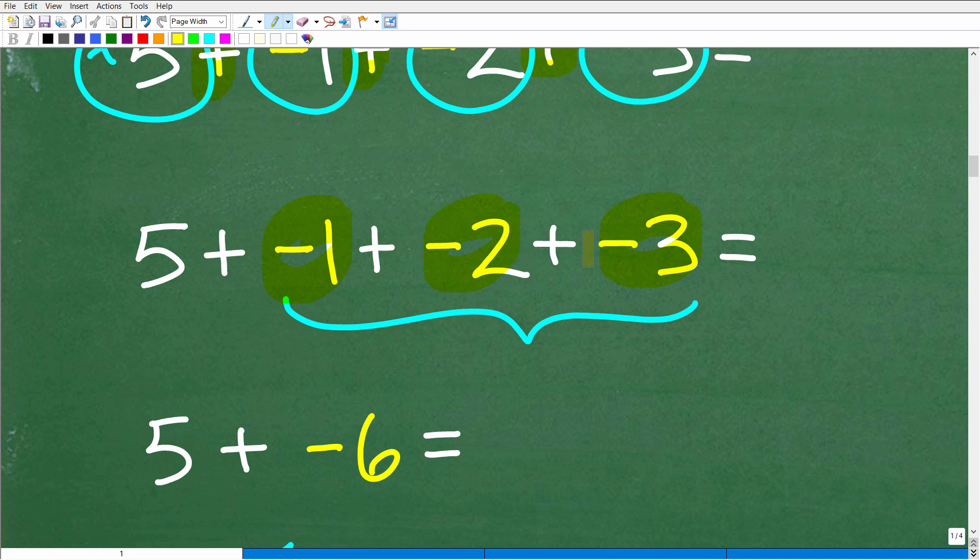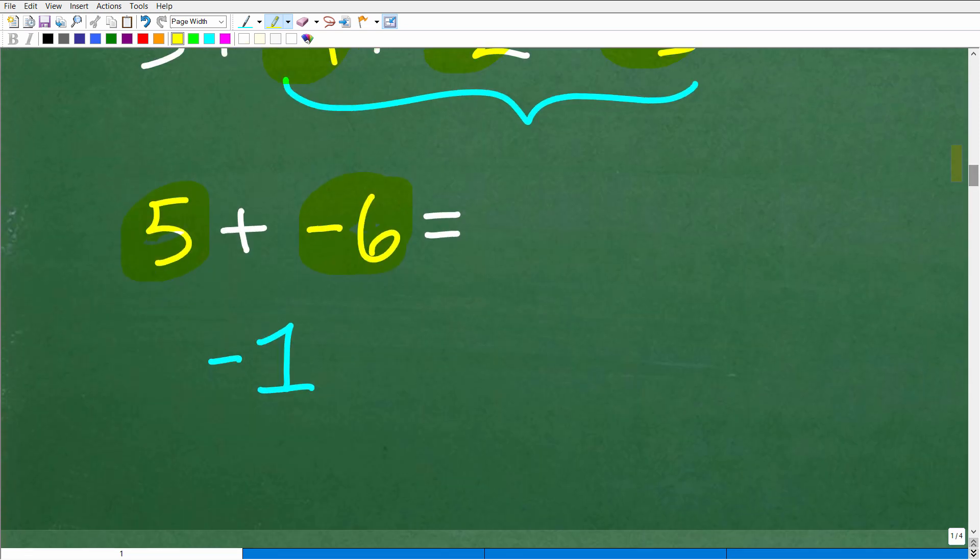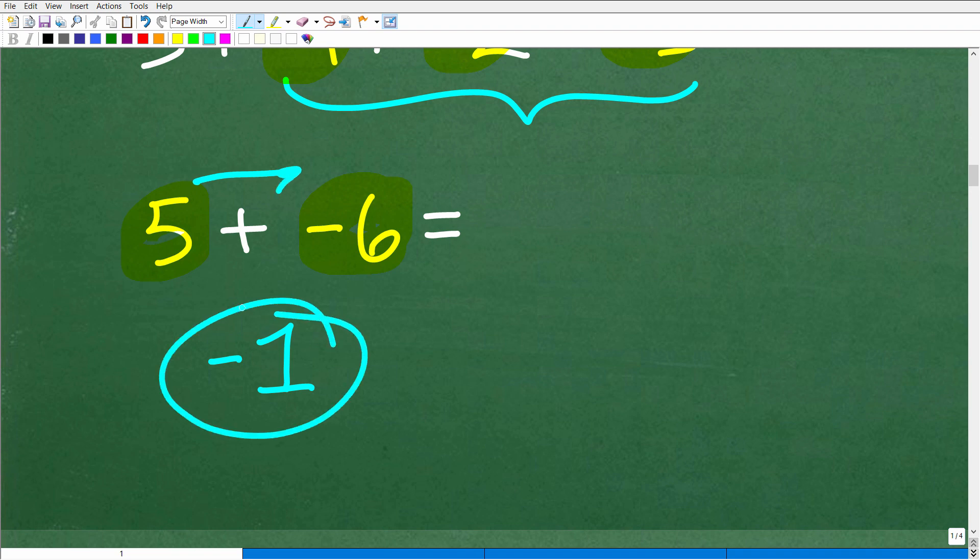Well, we have 1, 2, and 3. This is 6. So, we have $6 in debt. But we have $5 in our pocket. So, that means that when we pay our friend this $5, we still owe them $1. So, 5 plus negative 6 is negative 1.